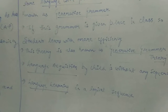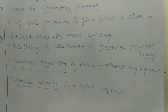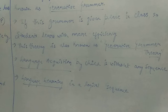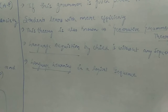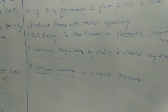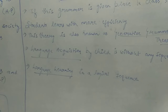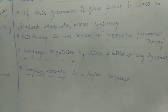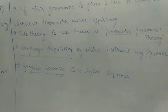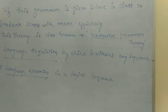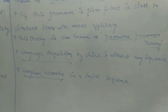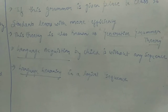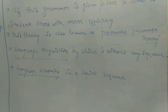This is called the Generative Grammar Theory, because the child is generating or acquiring language naturally. There are two key points: one is Learning, and the other is Acquisition. Acquisition means natural uptake — when the child learns without a formal sequence, it happens naturally. This process follows a logical sequence, and that is the essence of Chomsky's linguistic development theory.